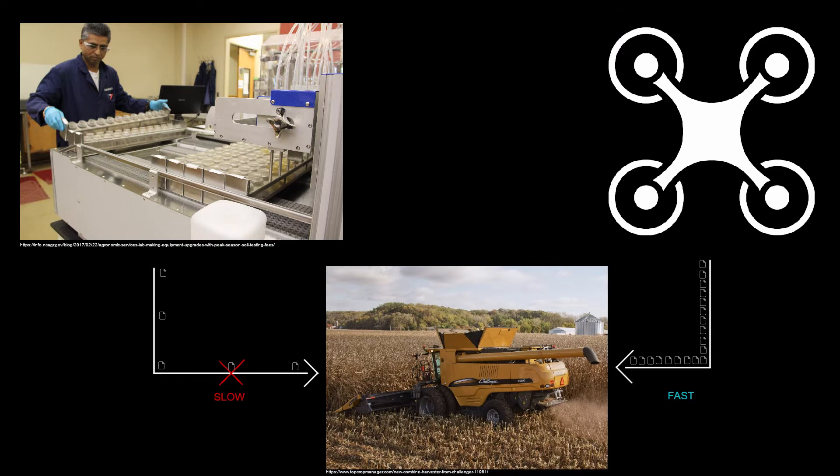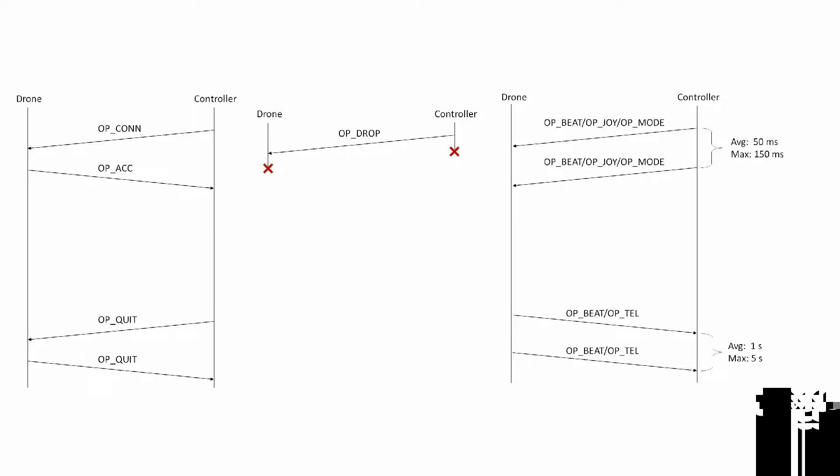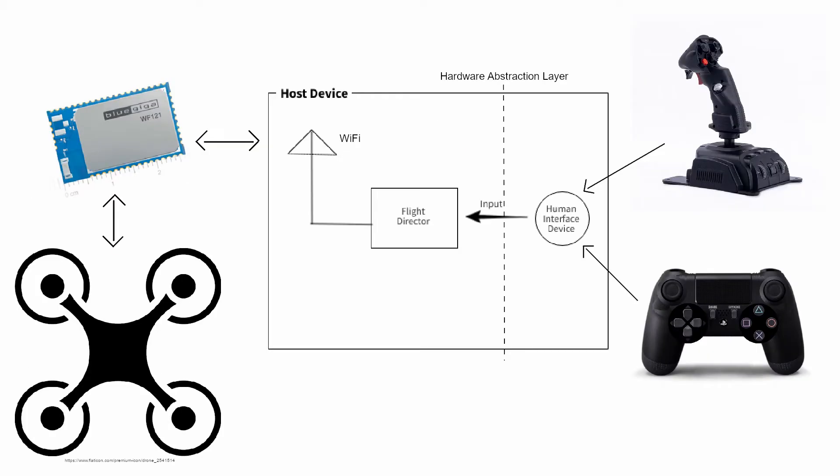AgriFlight seeks to cut out these laboratories and to provide an at-will solution for soil sampling. To do this, we designed the simple drone communication protocol to facilitate communication between the ground station and the drone itself. This protocol allows any controller, in any way it wishes, to communicate with the drone over Wi-Fi.